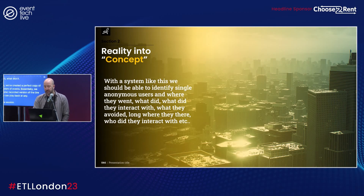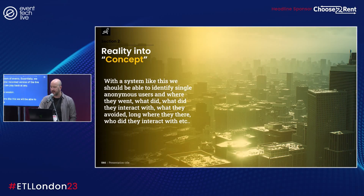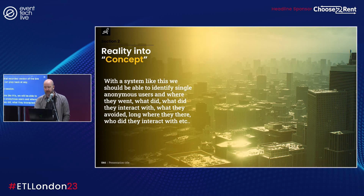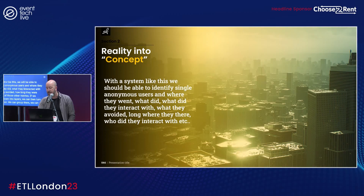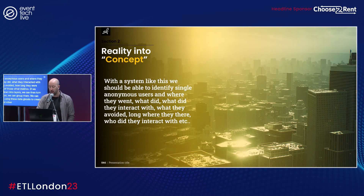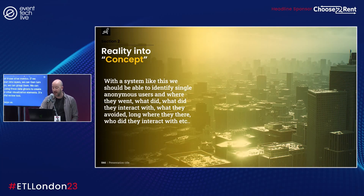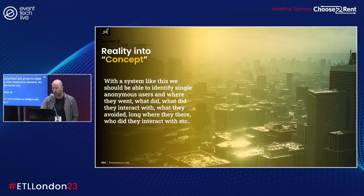With this data we've created a perfect copy of a complex event system — essentially a 3D spatial recorded version of the live event that we can play back at any point as a complete session. We can identify single anonymous users: where they went, what they did, what they interacted with, what they avoided, and how long they were there. Breaking these down into layers, we can turn them off and on, group them, and use these data ghosts to create heat maps and other visualization elements. This helps us evolve our designs and our knowledge of human behavior to fine-tune the events and exhibition spaces we work within.